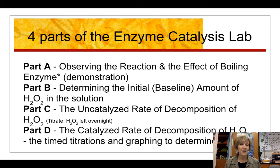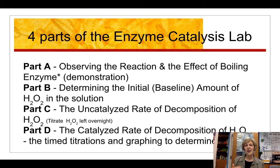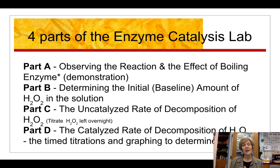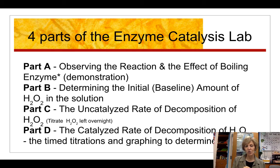There are four parts to the catalase lab. Part A is a demonstration: we're going to look at the effect of boiling the enzyme. It should not surprise you that boiling catalase will denature it — it won't work and won't break down hydrogen peroxide. Boiling heat is another way to denature an enzyme.